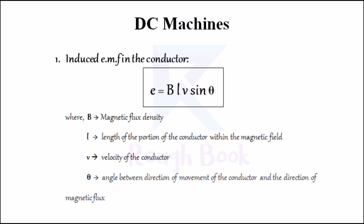Number one: induced EMF in the conductor. Whenever a conductor is moved in a magnetic field such that it cuts across lines of flux, dynamically induced EMF is produced in it according to Faraday's laws of electromagnetic induction. The magnitude of this induced EMF is given by E = BLV sinθ, where B is the magnetic flux density, L is the length of the portion of the conductor within the magnetic field, V is the velocity of the conductor, and θ is the angle between the direction of movement of the conductor and the direction of magnetic flux.